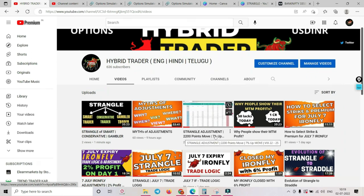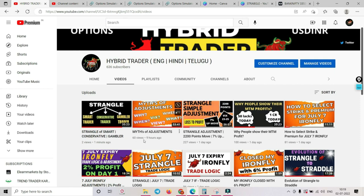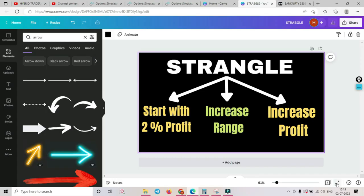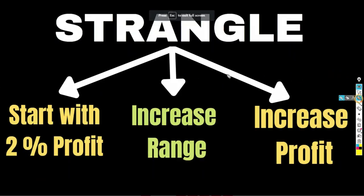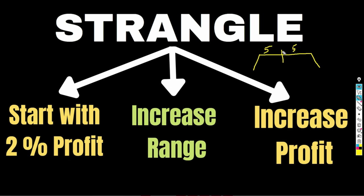In that previous example, the market gave a 220-point move — a 7% up move. Now, let's say you deployed a strangle where the market was in the middle, with 5% safety on the downside and 5% safety on the upside. Next day morning, the market opens with a gap up. Now you have 5+3% safety on the put side but only about 2% safety on the call side — this is absolutely imbalanced.